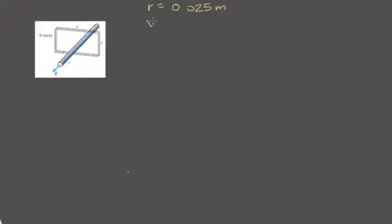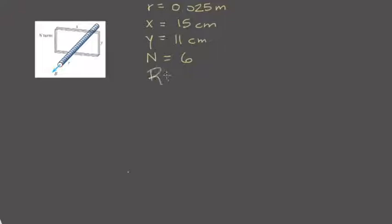So let's get started. First let's write down some givens. Maybe the radius of the cylinder of the solenoid is 0.025 meters. Maybe they give us dimensions x and y of the rectangular loops of wire — maybe 15 centimeters and 11 centimeters. Let's say the number of loops of wire is 6.